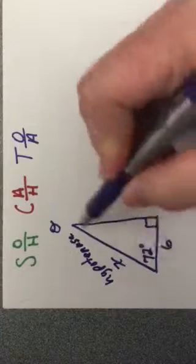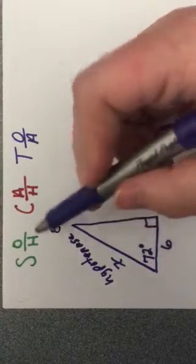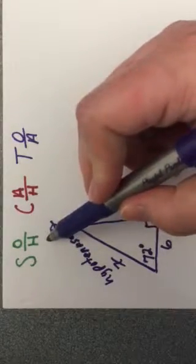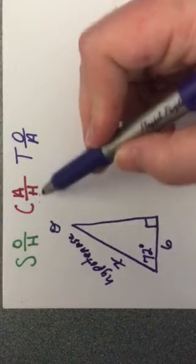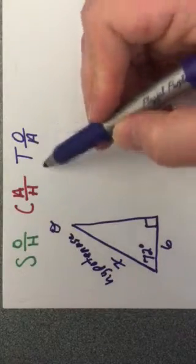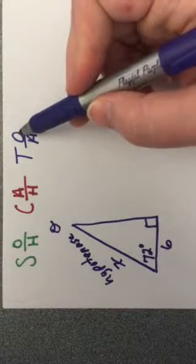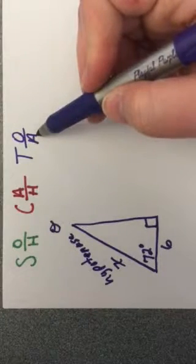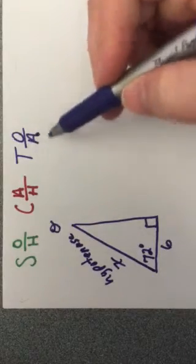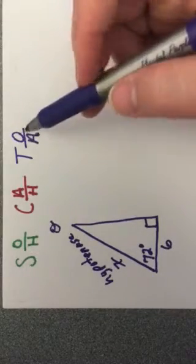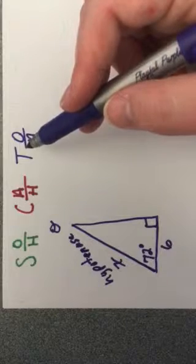This side is my hypotenuse, which means that I'm either going to want to use my sine ratio or my cosine ratio. I don't want to use tangent because that's talking about just using opposite and adjacent sides. Hypotenuse doesn't even occur. So it's not going to do us any good to use tangent in this case.